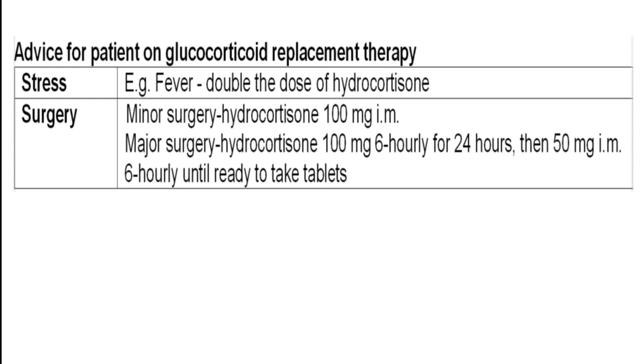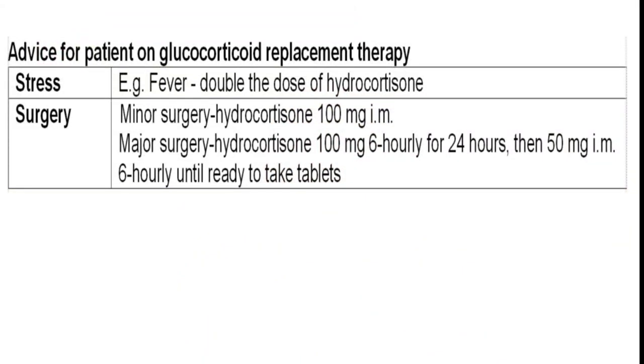For patients with chronic adrenal insufficiency undergoing surgical procedures, the steroid dose must be doubled during stressful conditions. Most patients on replacement therapy take hydrocortisone 10 mg morning and 10 mg evening. Unlike acute inflammatory conditions where a single morning dose is used, replacement therapy is given in divided doses. For minor surgery, give hydrocortisone 100 mg IM or IV. For major surgery, give hydrocortisone 100 mg every six hours for the first 24 hours.